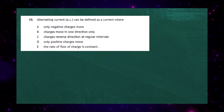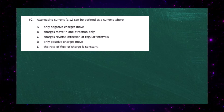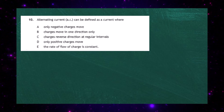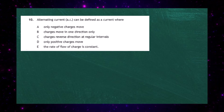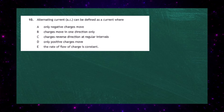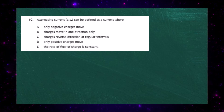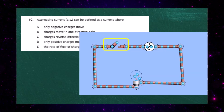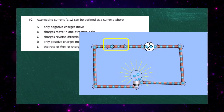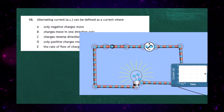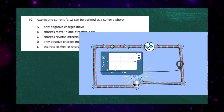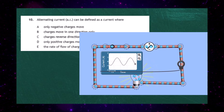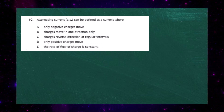Question 10 from the 2023 National 5 Physics examination. Alternating current (AC) can be defined as: A — only negative charges move; B — charges move in only one direction; C — charges reverse direction at regular intervals; D — only positive charges move; E — the rate of flow of charge is constant. As shown in the animation, AC is a current where charges reverse direction at regular intervals — the electrons go one way, then the other after a period of time. The current graph shows it going positive then negative alternately. The correct response is C.